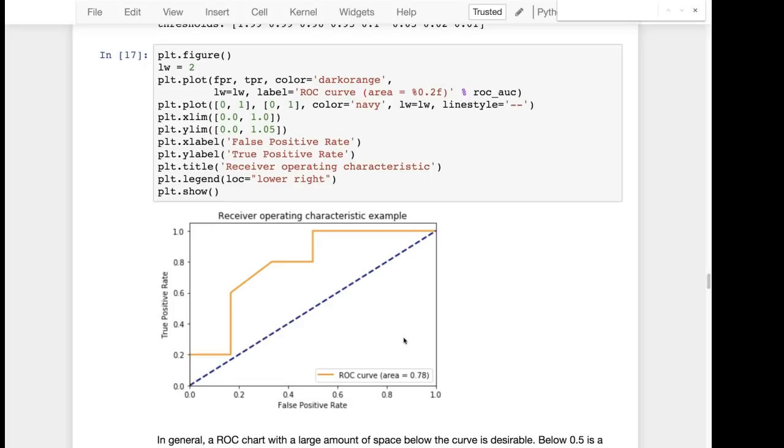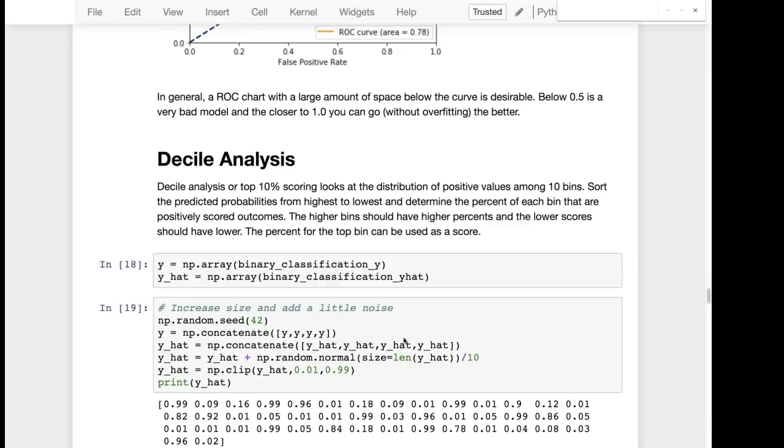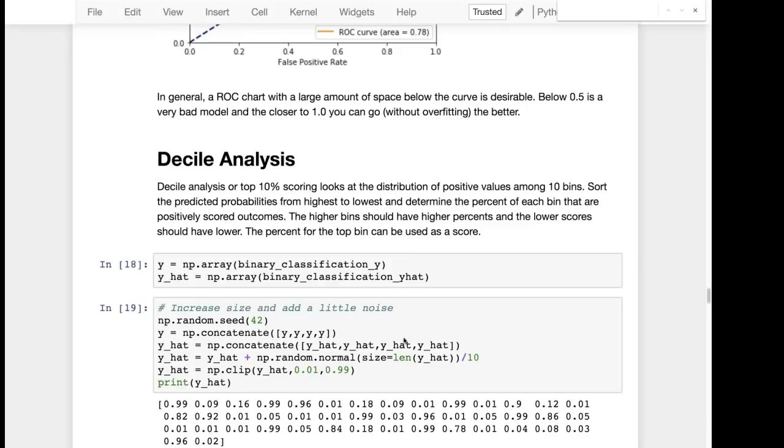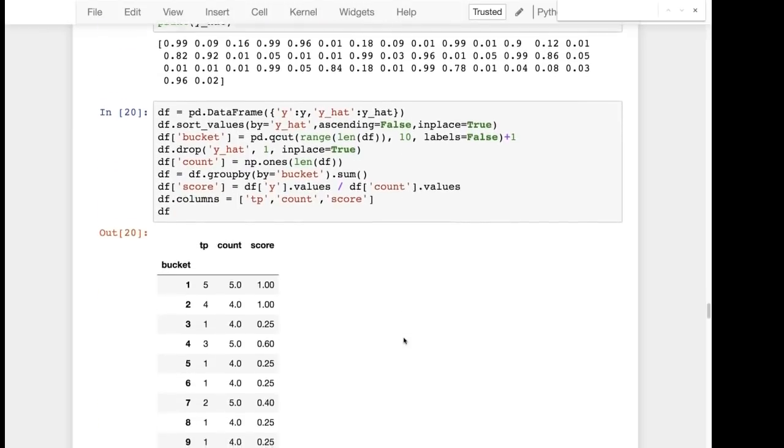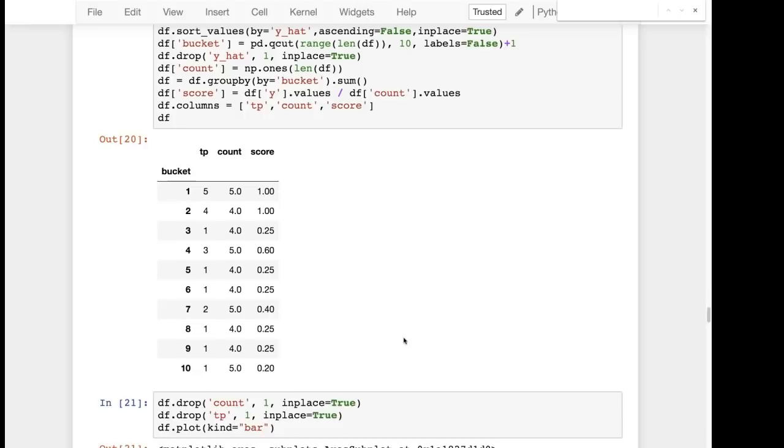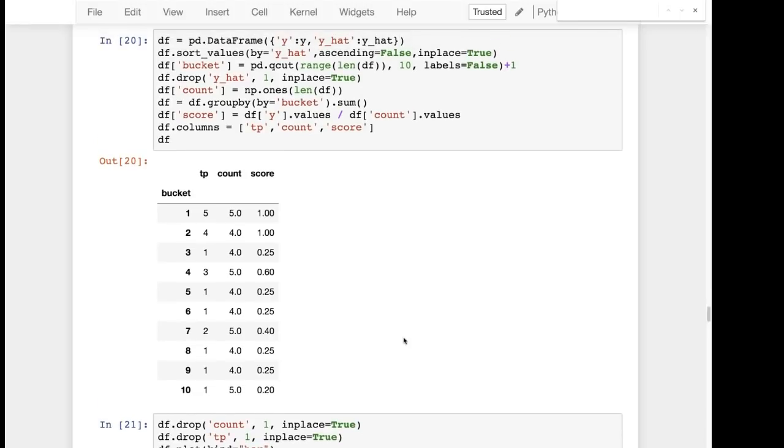Decile analysis is where you are looking at the bins that values go into. So essentially I get all of the predictions from the binary classification. There are probabilities so the high ones are going to be close to one. The low ones are going to be close to zero.